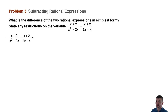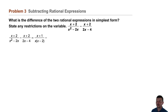As in the previous problems, we'll begin by factoring the denominators. x squared minus 2x, the denominator on the left, is factored as x times the binomial x minus 2. And from 2x minus 4, the denominator on the right, we factor out a 2 to get 2 times x minus 2.